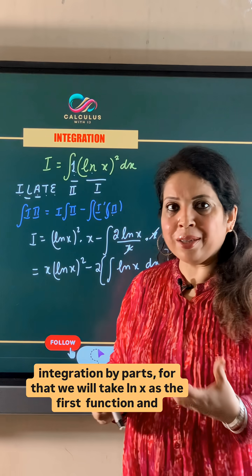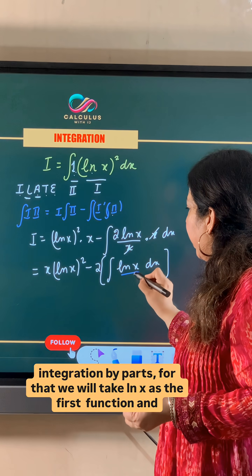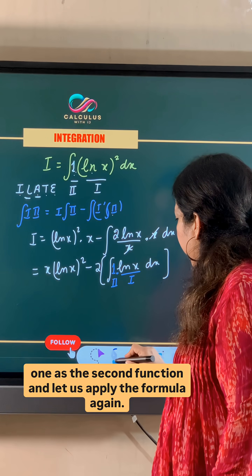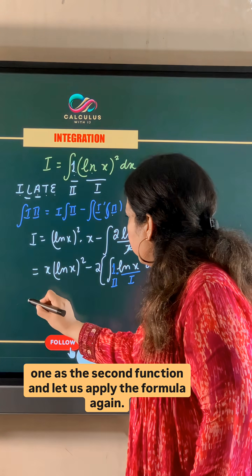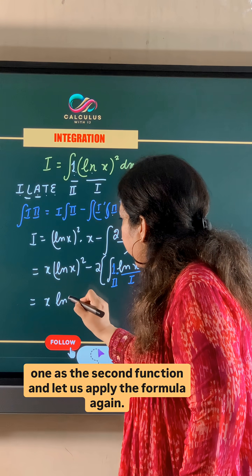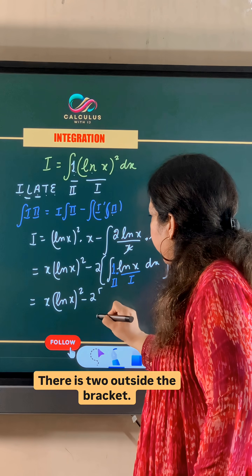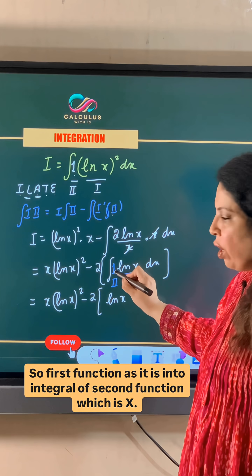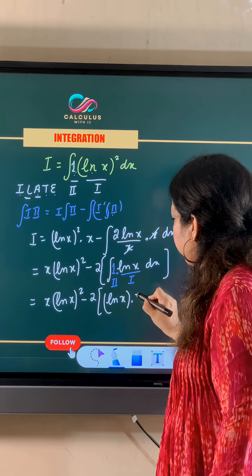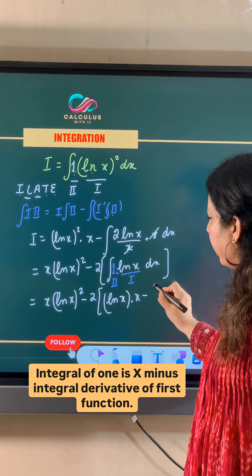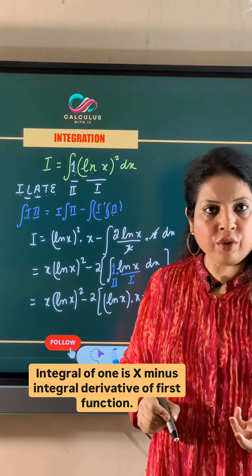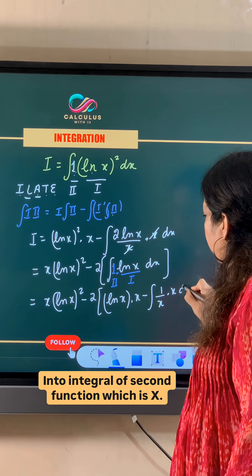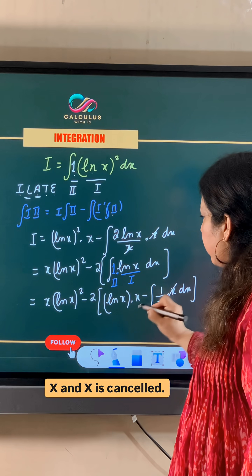Again using integration by parts, we take ln x as the first function and 1 as the second function and apply the formula again. There is a 2 outside the bracket. So: first function as it is, into the integral of the second function which is x, minus the integral of the derivative of the first function, which is 1/x, into the integral of the second function, which is x. The x and x cancel.